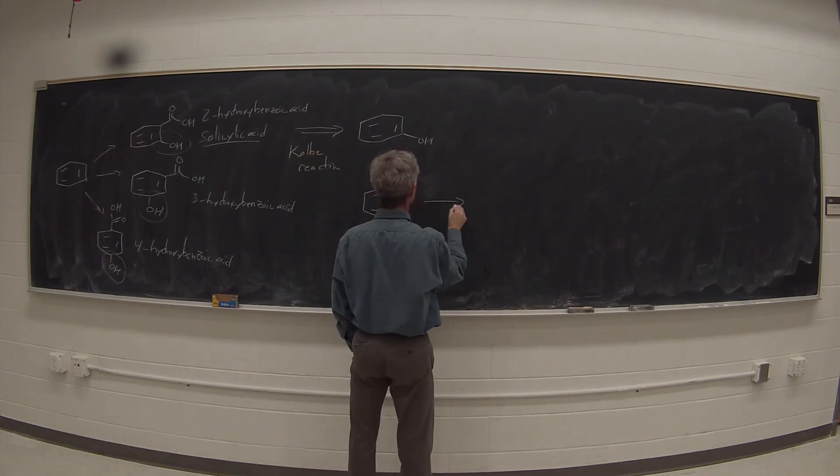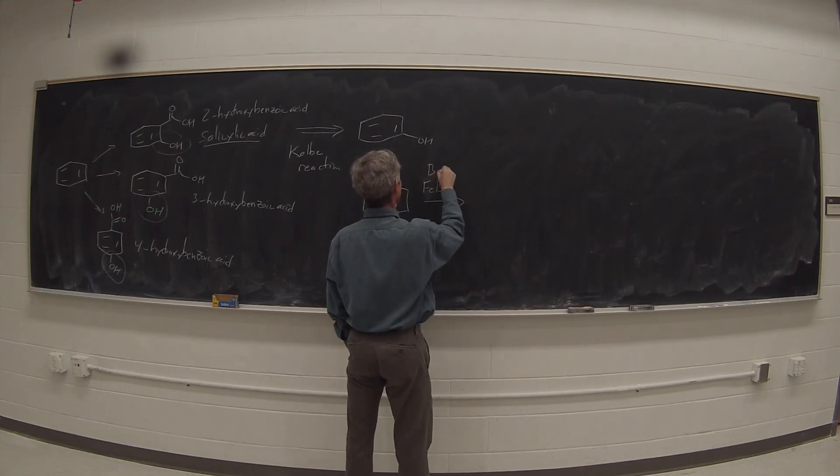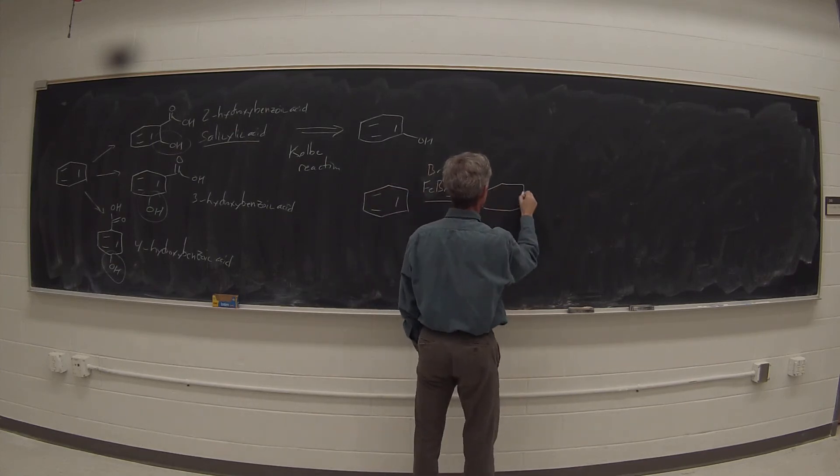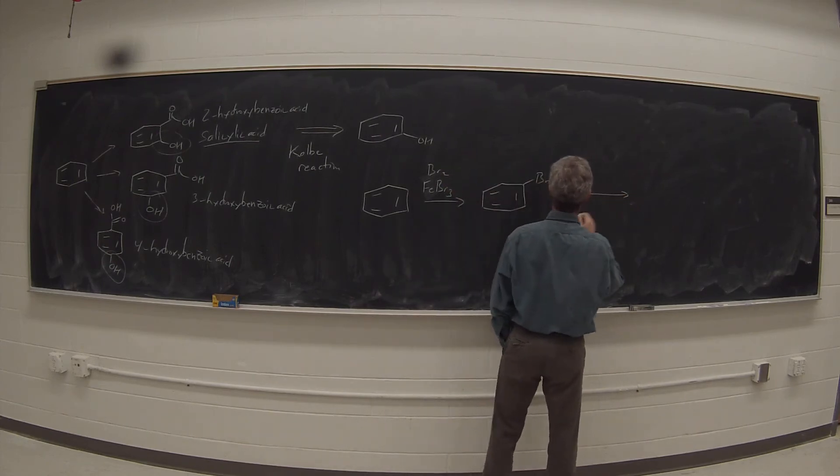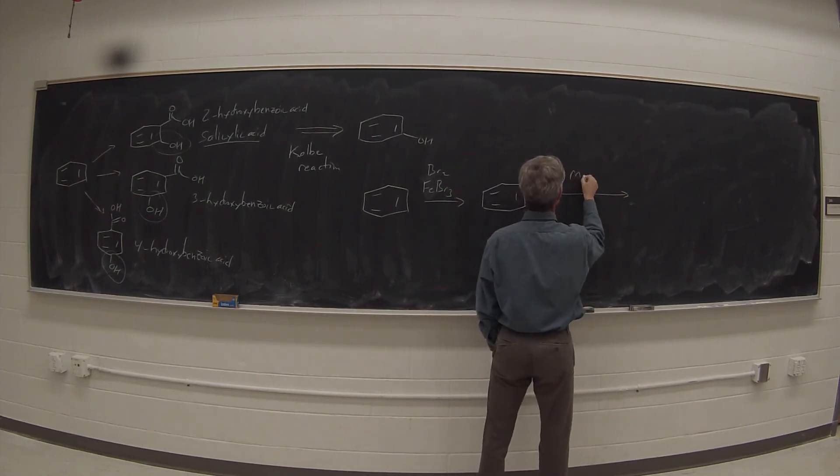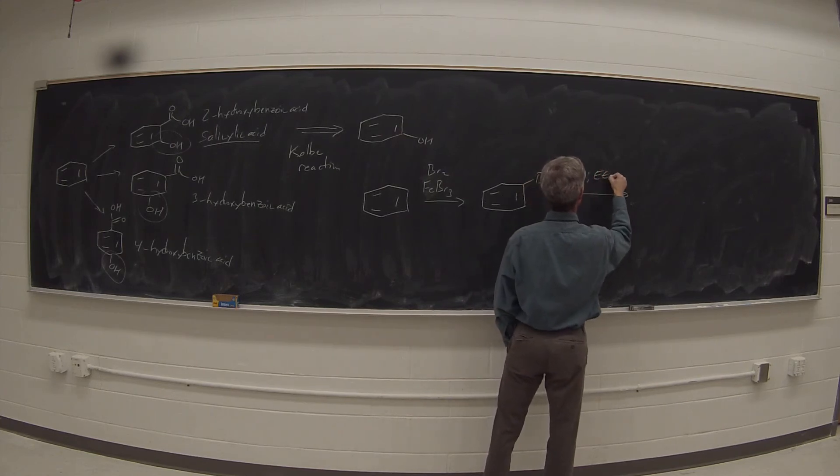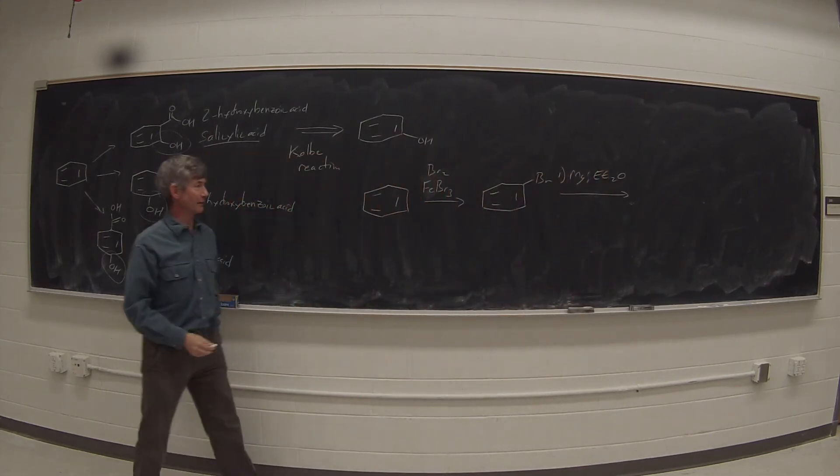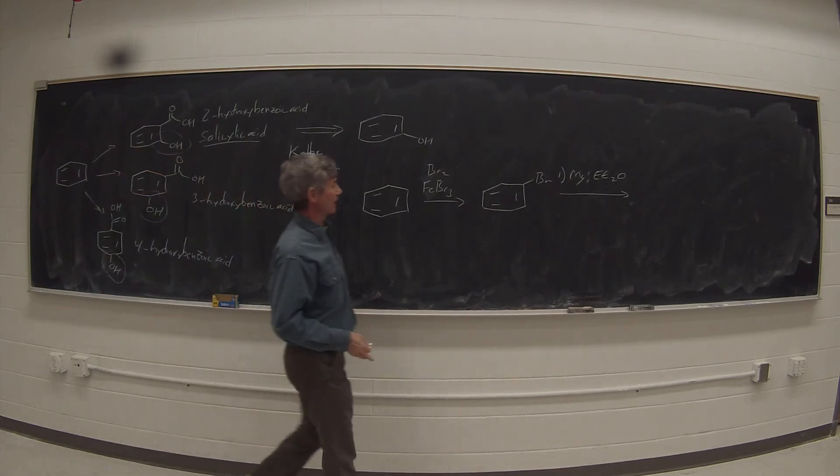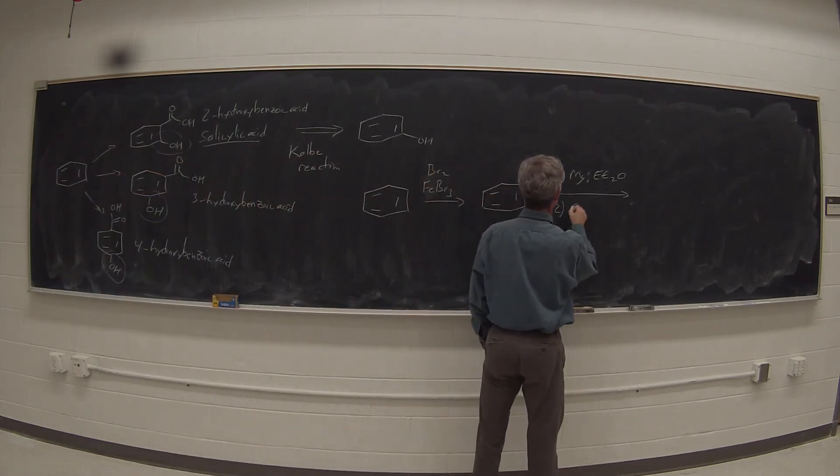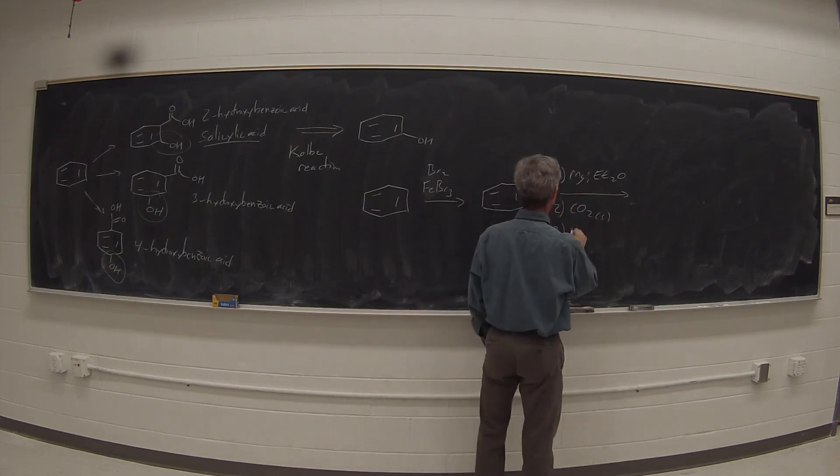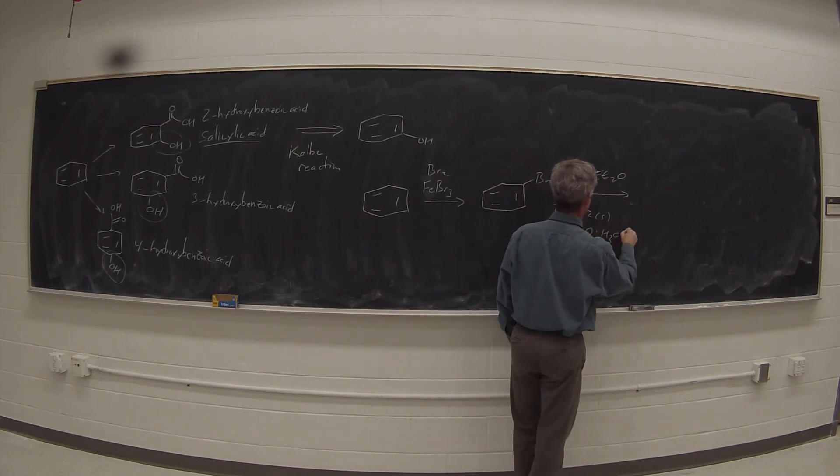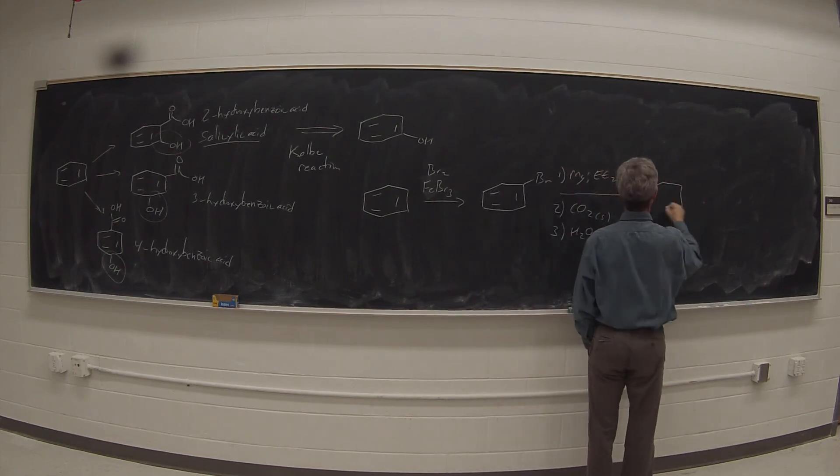So we can react this with bromine, PBr3 and Br2, to make bromobenzene. And now we're going to react this with magnesium and ether, which is what we did before when we were making that secondary alcohol. But this time in the second step, we're going to react that with CO2 solid followed by H3O+ acid workup to make benzoic acid.